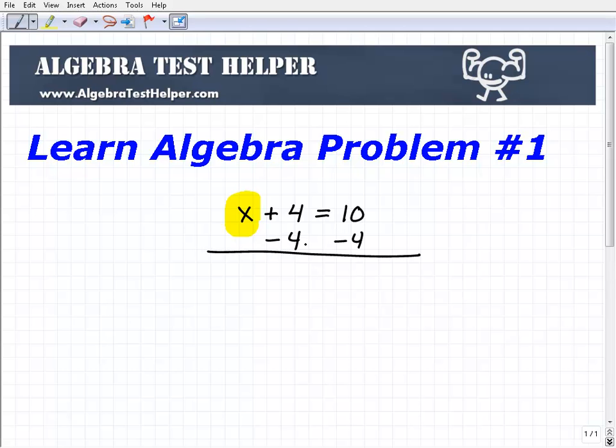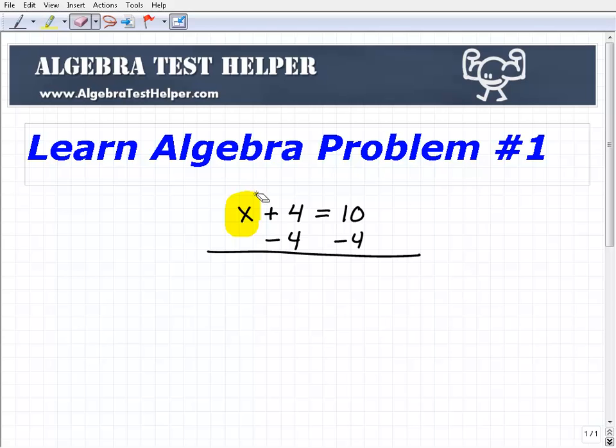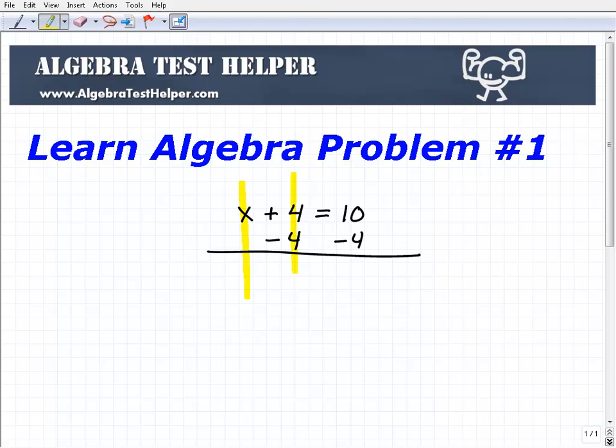So I'm going to go ahead and subtract 4 from both sides of the equation, and you want your work to kind of look like the way I'm doing it here. Now what you're going to do is you're going to add down in a column manner. I'm just putting these highlighters in there, so you can kind of see what I'm going to be doing.